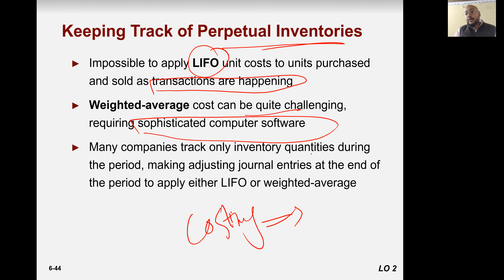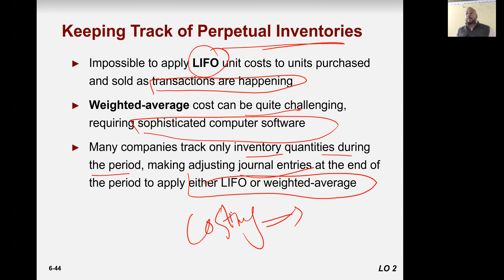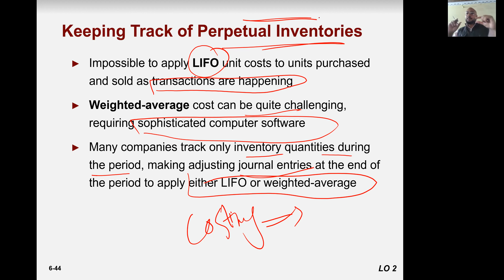So many companies track only inventory quantities during the period, making adjusting entries at the end to apply either LIFO or weighted average. Rather than finding ending and opening inventory daily, you go for periodic closing — for example, at the beginning and end of March — then find the ending inventory, as we did in our examples.